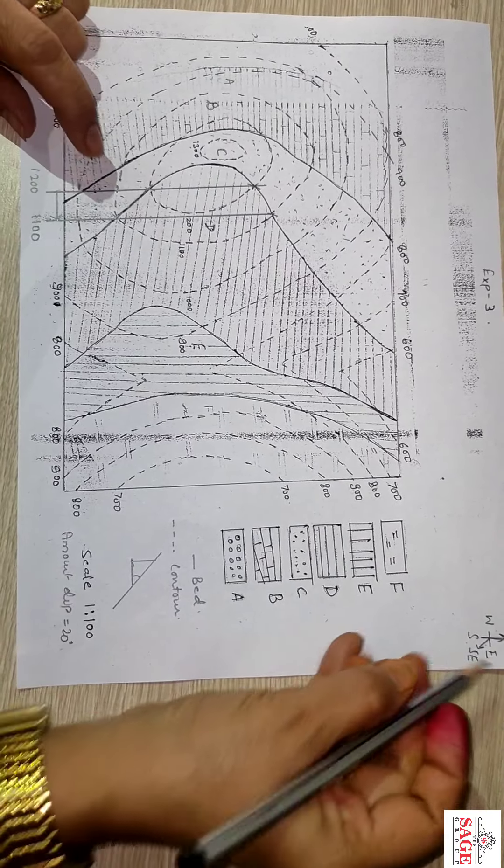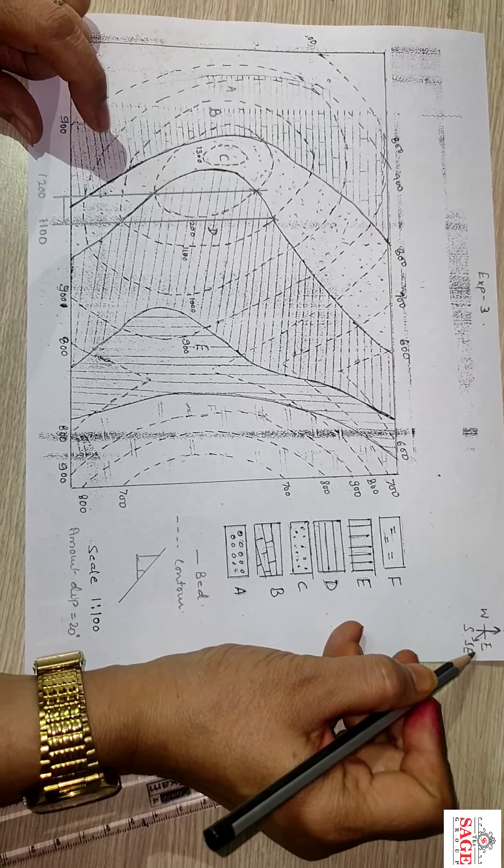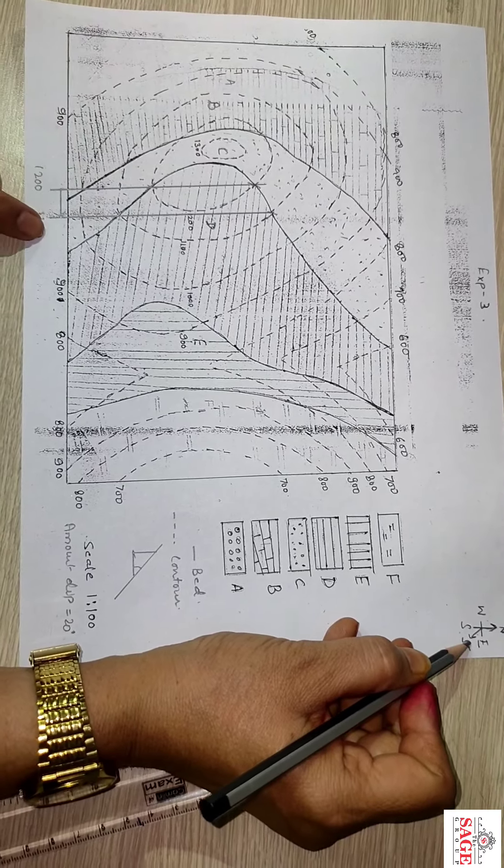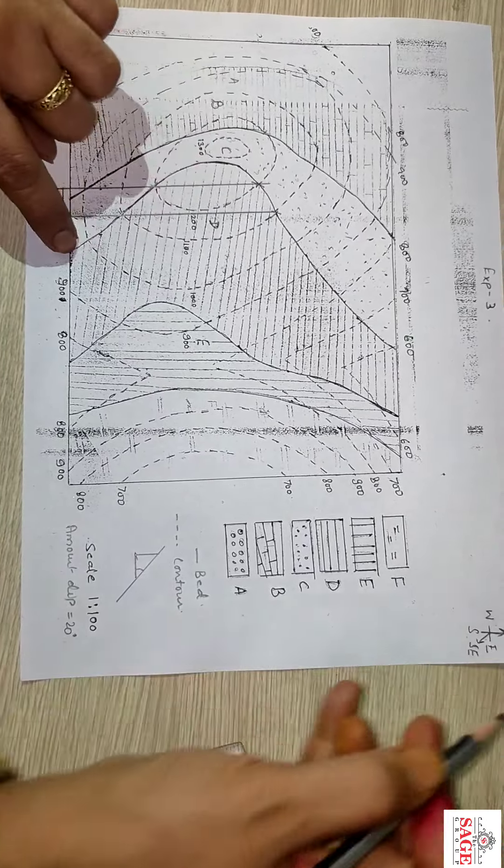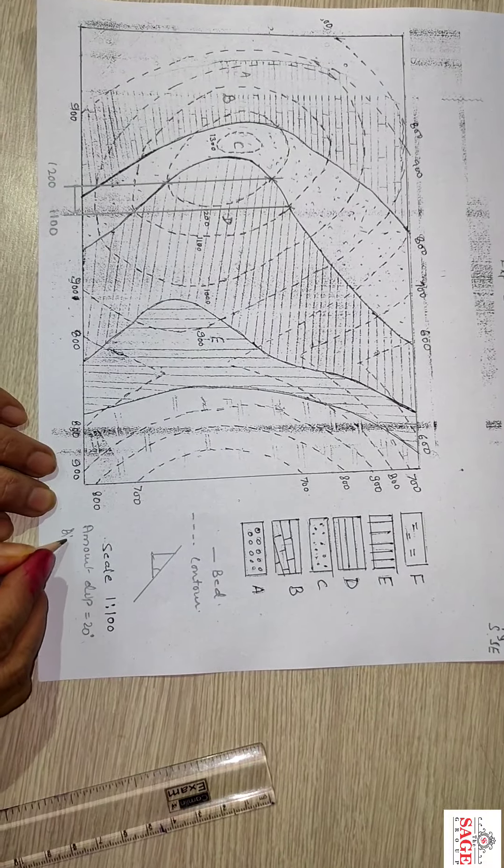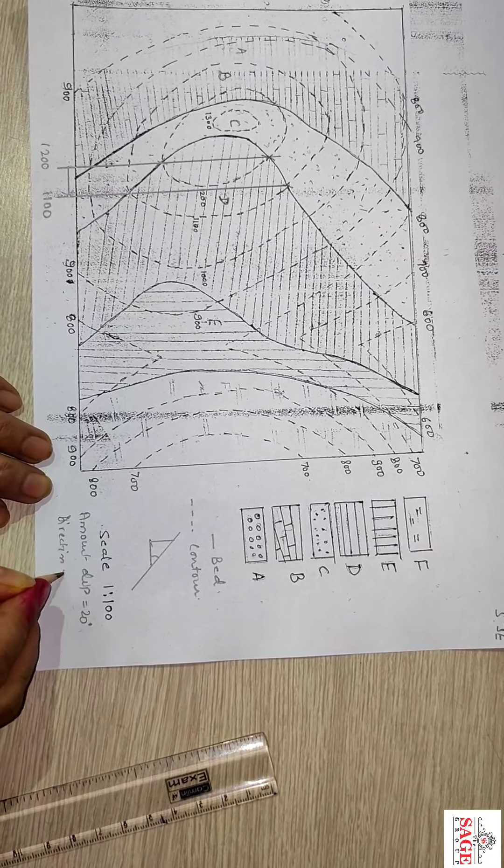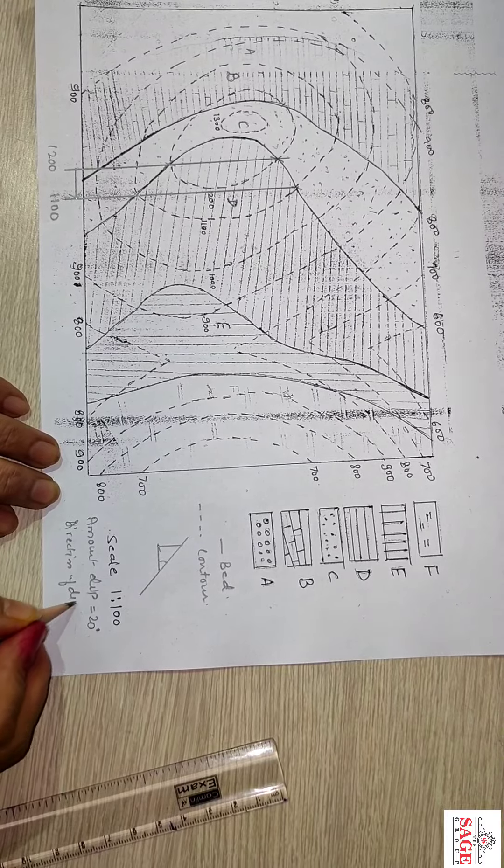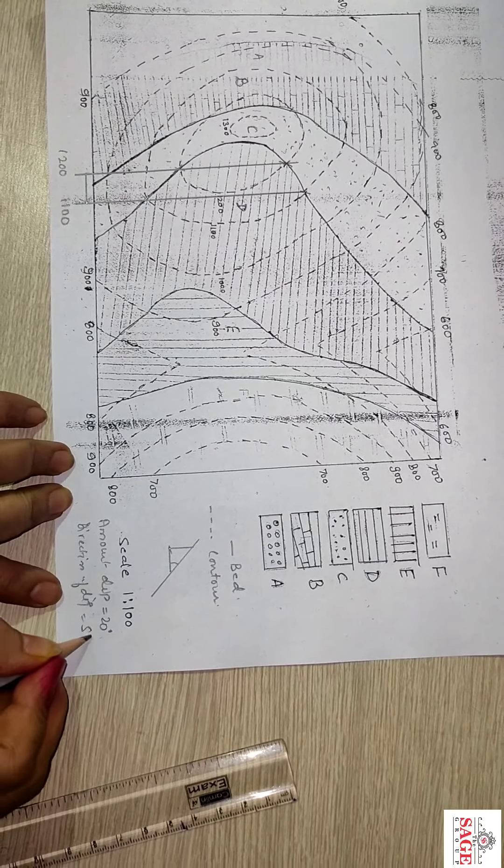You have already found direction. This is a direction. You can see here this one, south eastward. These inclination is towards the south east. Direction of dip is south east.